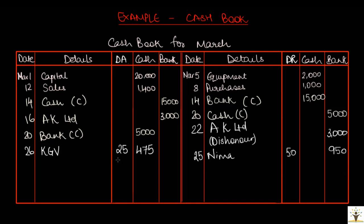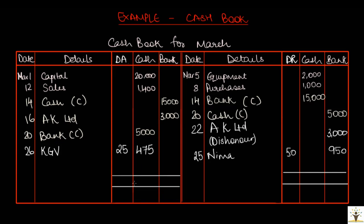Once the transactions are recorded, the cashbook has to be balanced at the end of March. The cash column and the bank column both will be balanced individually. Balancing is done the same way as for ledger accounts. The debit total of the cash column is greater than the credit total, so take the total on the debit side, $26,875, copy it to the credit side, and the balance carried down is $8,875. For the bank column, debit side total is $18,000 and credit side total is $5,950, giving a balance of $12,050.